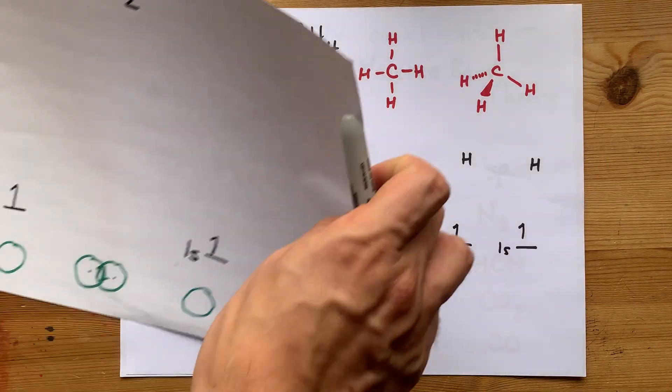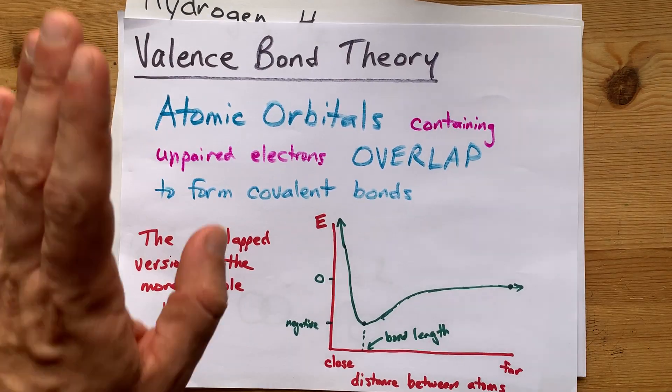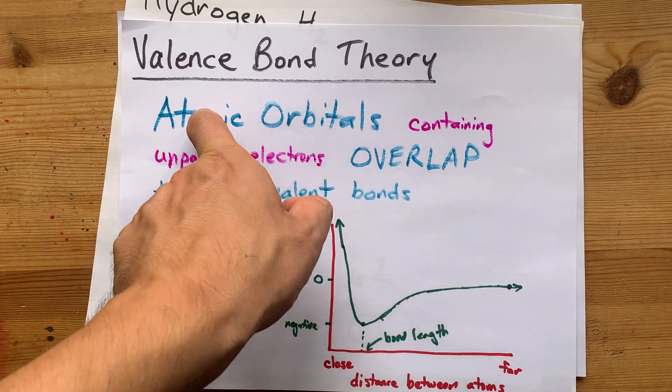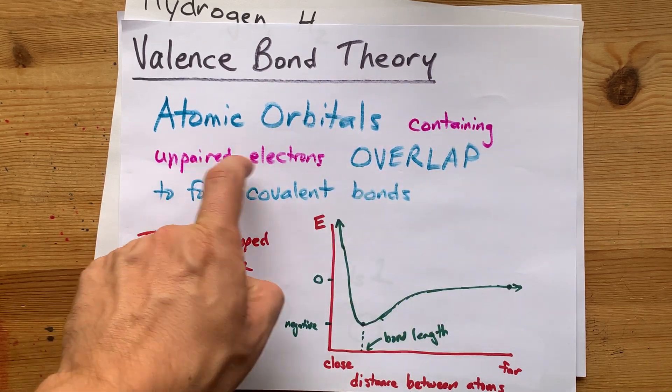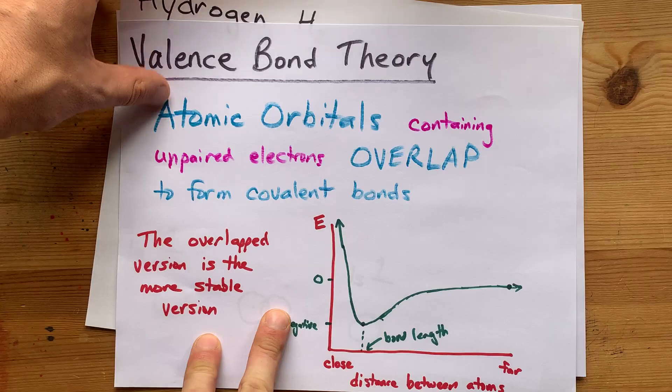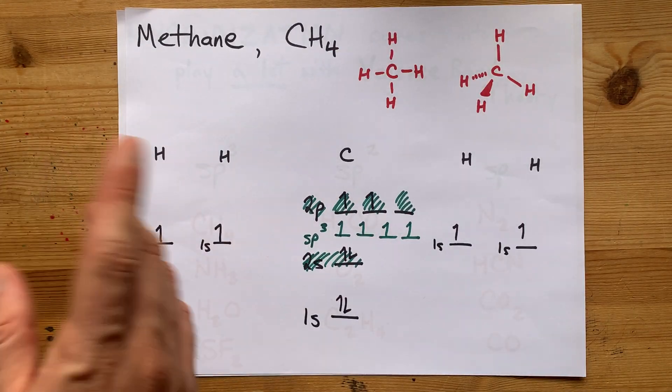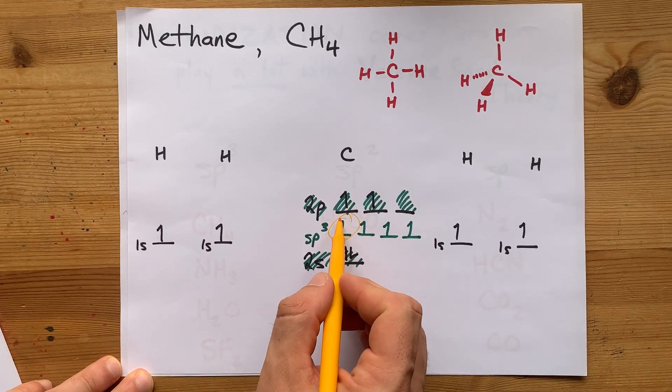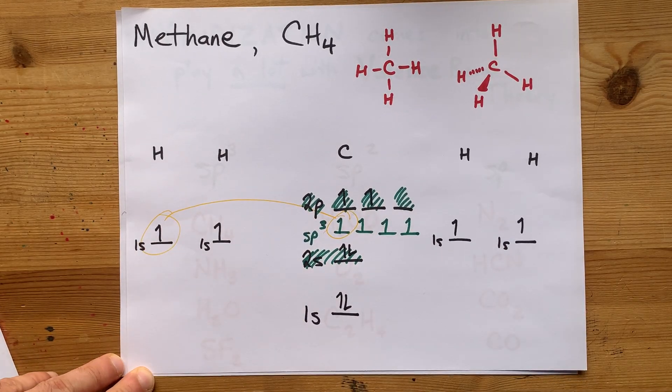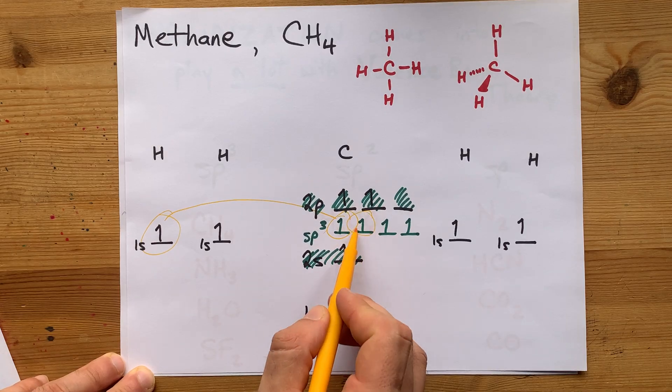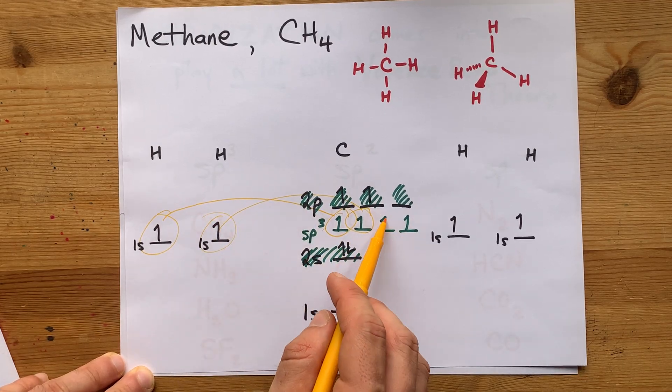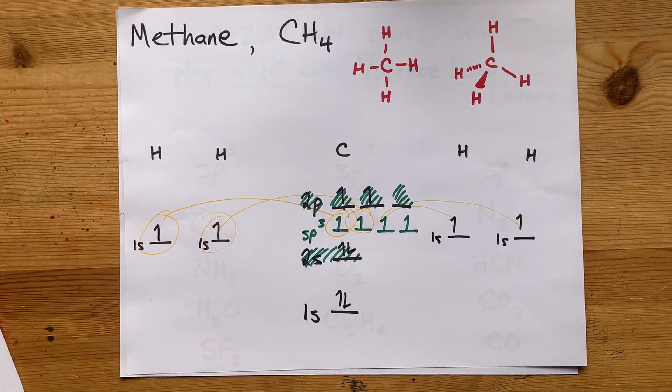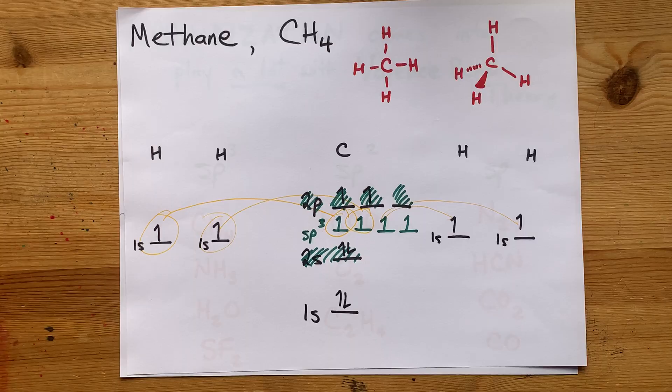You came here for what valence bond theory is. It's the idea that the atomic orbitals are overlapping, and those atomic orbitals usually contain unpaired electrons, so you'll get to see physically which things are combining. One of carbon's hybridized orbitals overlaps with this hydrogen's 1s. One of them overlaps with this hydrogen's 1s, et cetera. Four bonds for four equivalent hybrid orbitals. Beautiful.